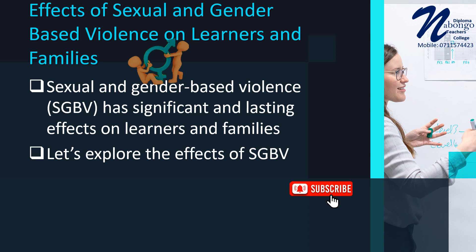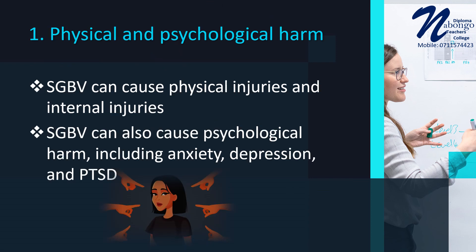Effects of Sexual and Gender-Based Violence on Learners and Families: Sexual and Gender-Based Violence (SGBV) has significant and lasting effects on learners and families. Number 1 — Physical and Psychological Harm: SGBV can cause physical injuries, including bruises, cuts, broken bones, and internal injuries. It can also cause psychological harm, including anxiety, depression, post-traumatic stress disorder (PTSD), and other mental health conditions.